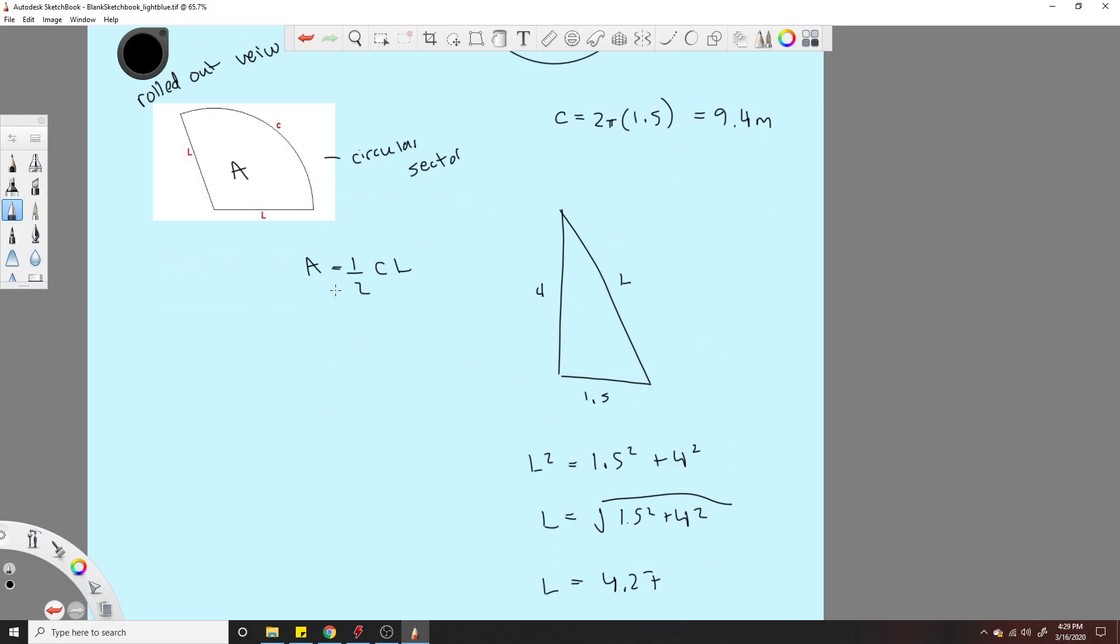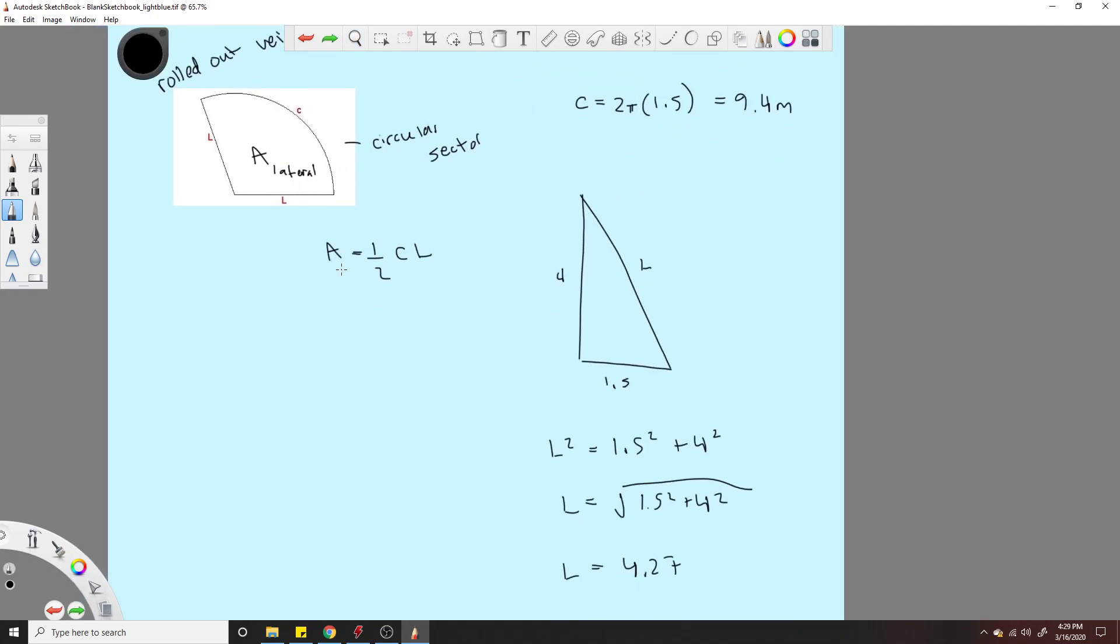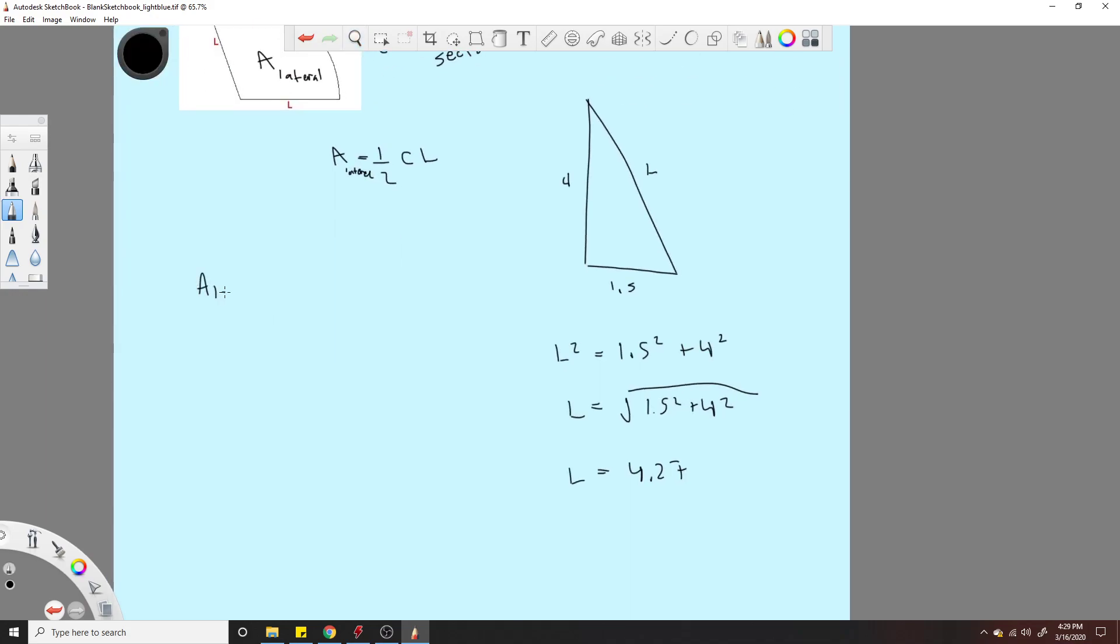We would, this should be called a lateral. That's what I called it earlier. Sorry about that. Remember this is just the lateral surface area going across here. This is also lateral. So a lateral equals 1 half the circumference, which is 9.4.